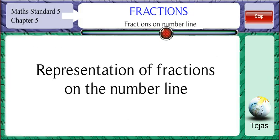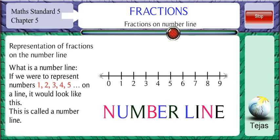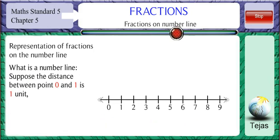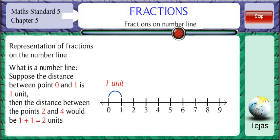Representation of fractions on the number line. If we were to represent 1, 2, 3, 4, 5 and so on, on a number line, it would look like this. This is called a number line. Here, the numbers are evenly spaced out. Suppose the distance between point 0 and 1 is 1 unit. Then the distance between the points 2 and 4 would be 1 plus 1 which is equal to 2 units.